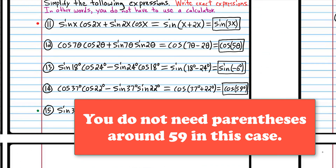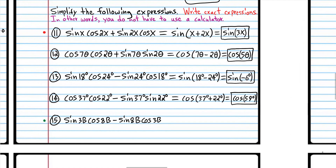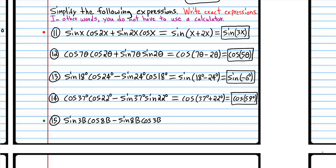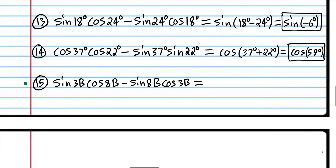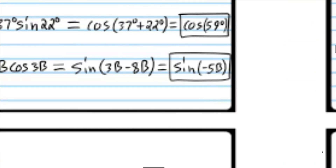Try number 15 and when you come back we'll do it together. We're back. We have a product of sine and cosine, so we're going to use the sine function, and we have a subtraction symbol so we're going to subtract: 3b minus 8b equals negative 5b, giving sine(−5b). It's probably best to use parentheses to avoid confusion especially when you have a negative symbol.